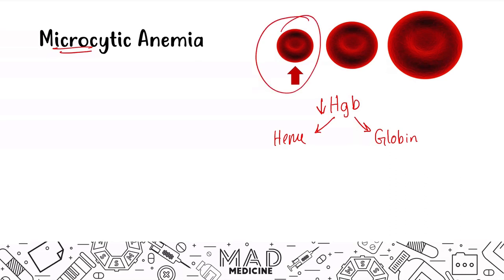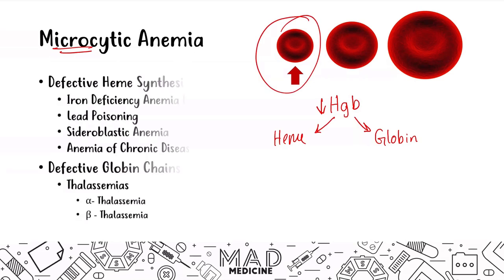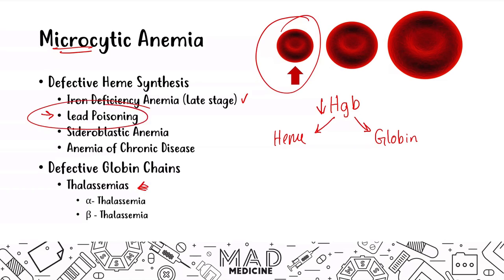This small red blood cell depicts an MCV that is less than 80. The types of defects you can have in defective heme synthesis include iron deficiency — specifically late-stage iron deficiency anemia — lead poisoning, sideroblastic anemia, and anemia of chronic disease. In defective globin chain synthesis, you can have thalassemias. Today we're focusing on lead poisoning. Just keep in mind that lead poisoning causes a defect in heme synthesis, which leads to decreased hemoglobin synthesis overall and a microcytic anemia.